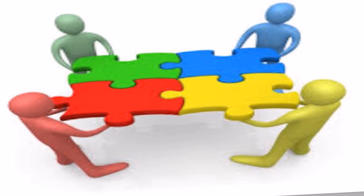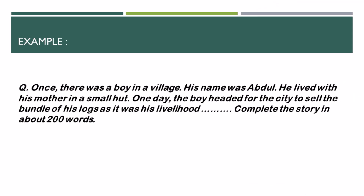Now let's see how the story should be composed using all the important elements. Let's solve a question for better understanding. The given beginning is: 'Once there was a boy in a village. His name was Abdul. He lived with his mother in a small hut. One day, the boy headed for the city to sell the bundle of his logs as it was his livelihood.' You have to complete the story in about 150 to 200 words for 10 marks.